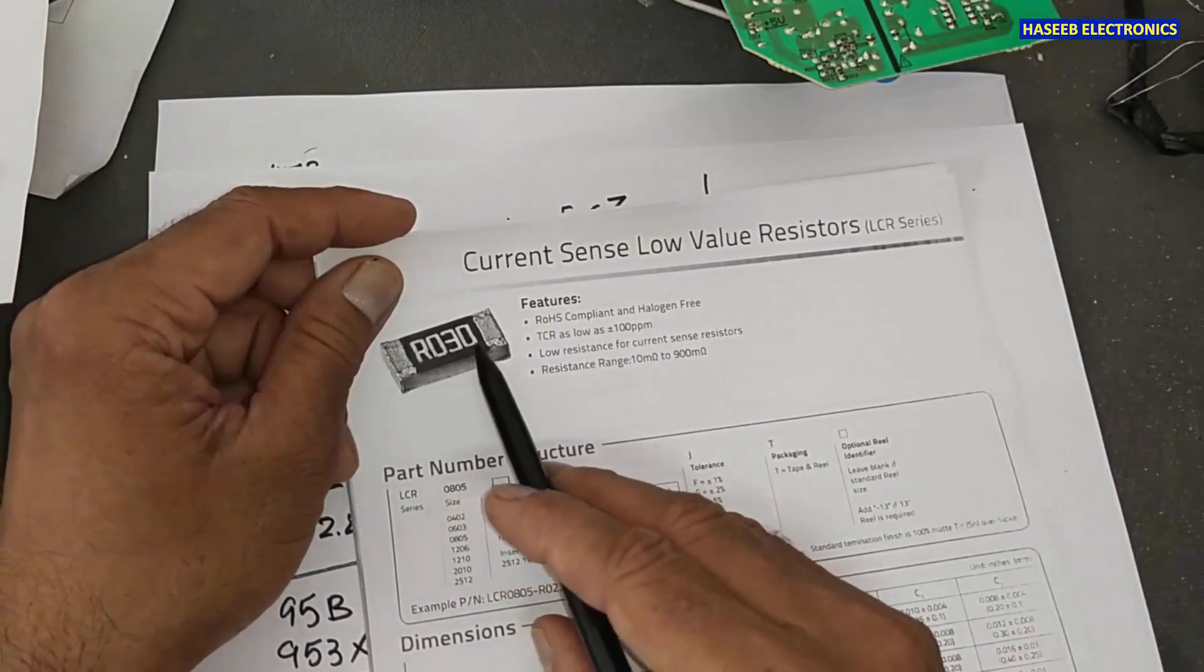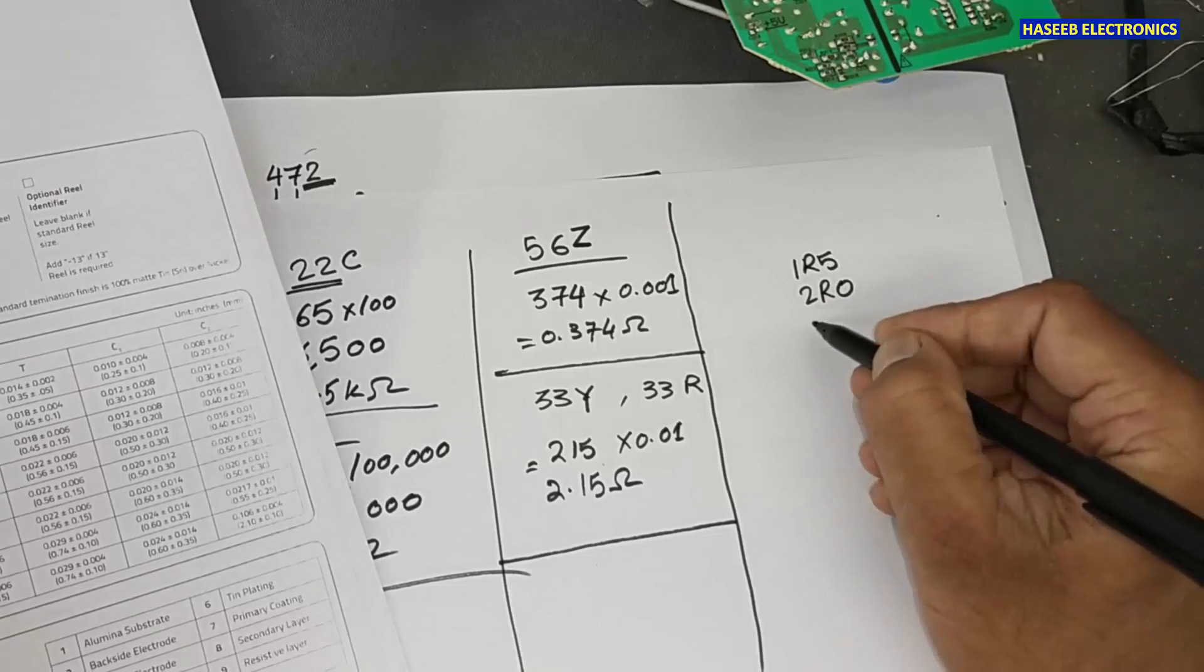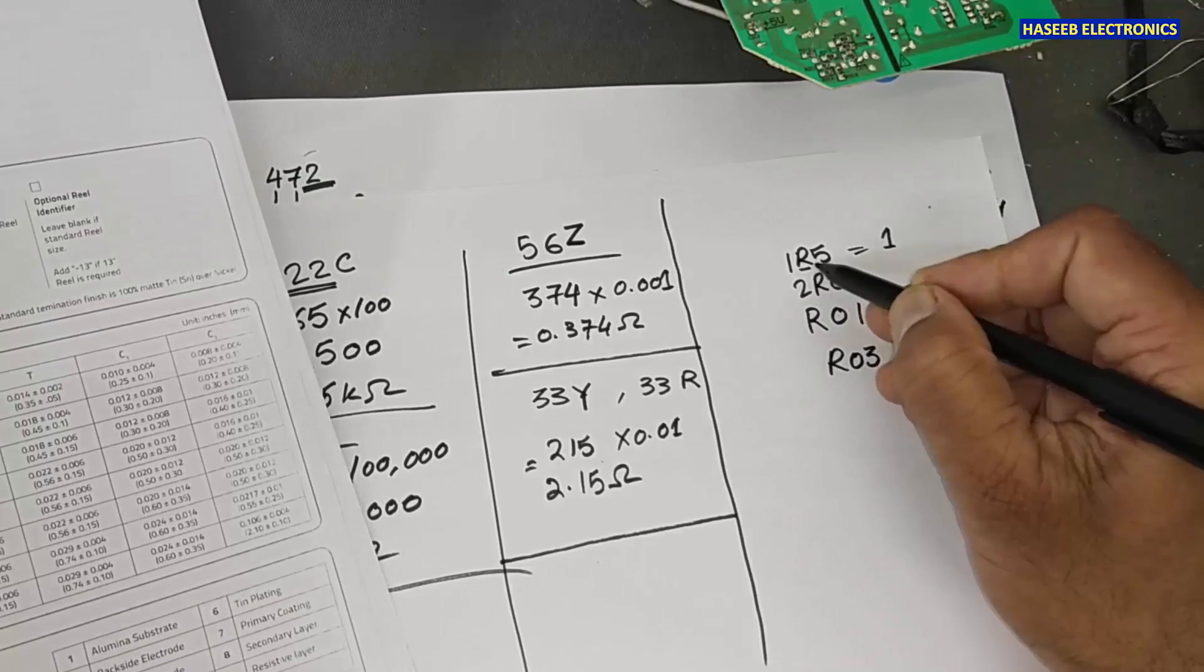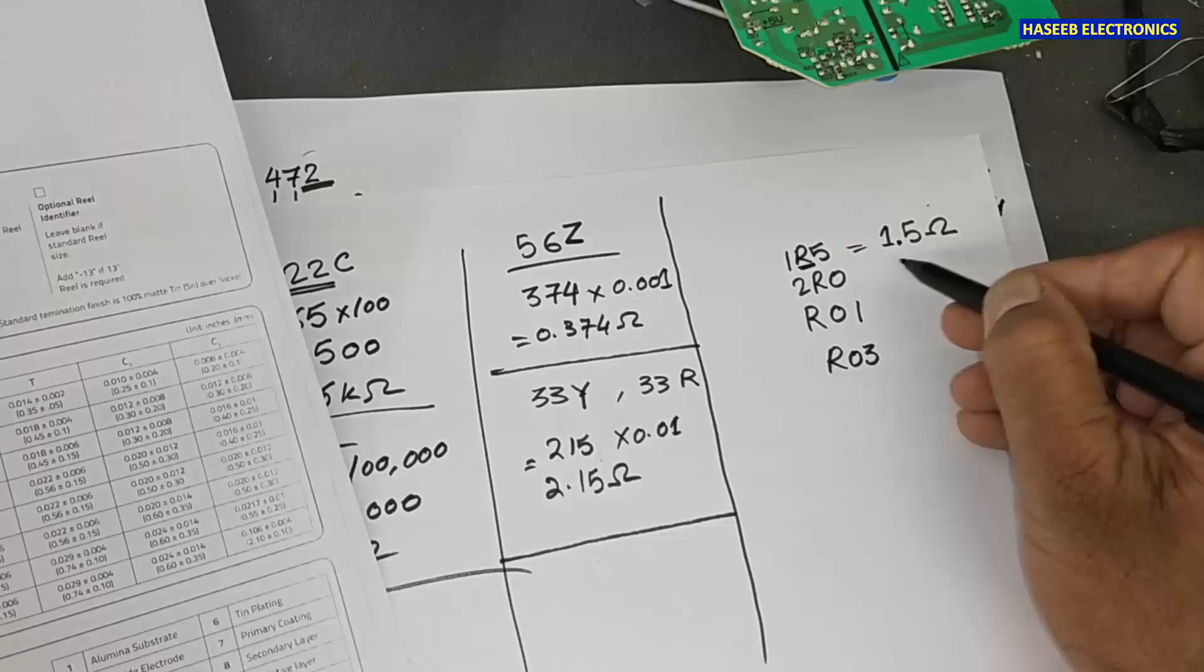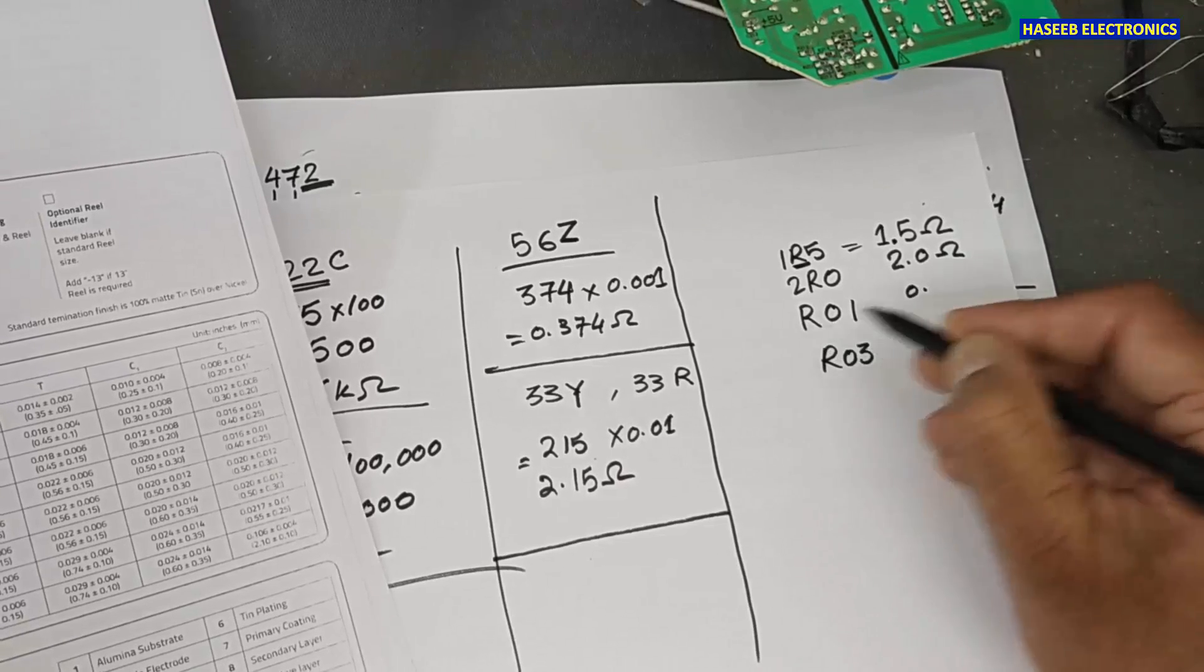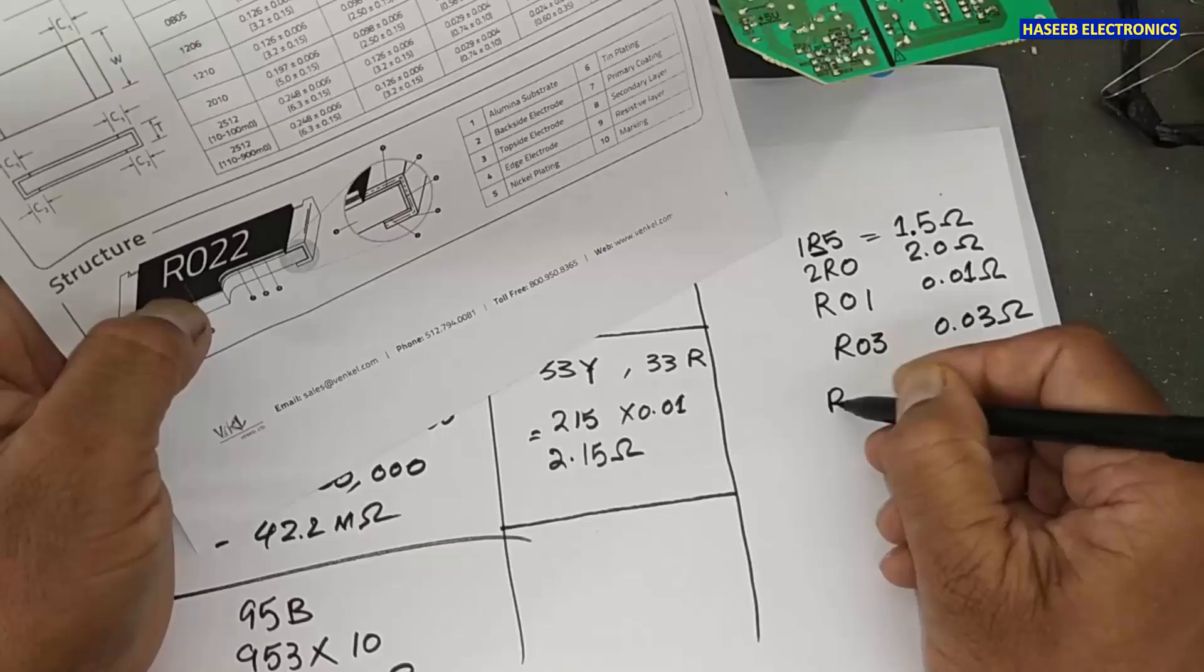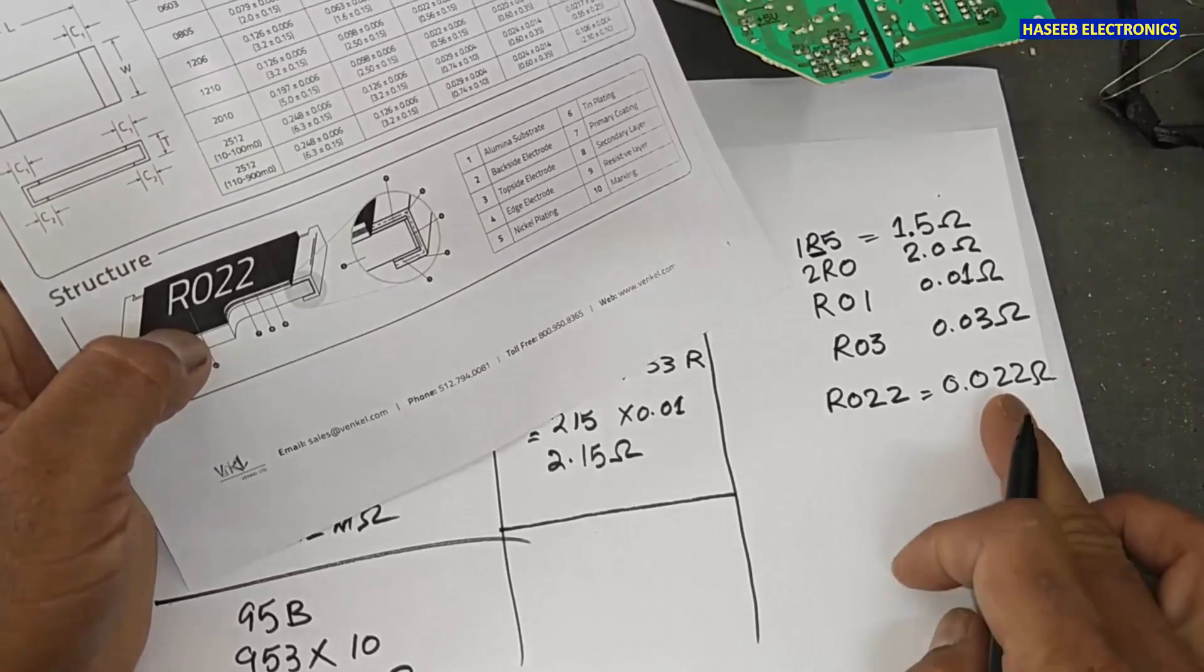Here is current sensor resistors R030. If we see 1R5, 2R0, R01, R03. That means 1R will identify the decimal location, decimal point. 1.5 ohms. 2R0, 2.0 ohms. R01, 0.01 ohm. 0.03 ohms. For example, R022. That means it is 0.022 ohms. 22 milli ohms.